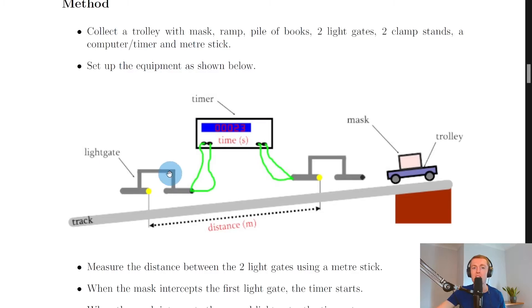You can see we've got the timer connected to two light gates, a trolley with a mask on it - that's just a bit of card on the top - and the light gates set a certain distance apart. The track or ramp is lifted up at one end by a pile of books.